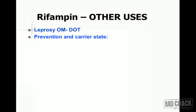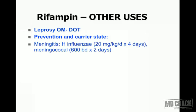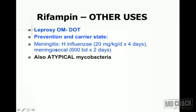Rifampin is also used for prevention and carrier states: for H. influenzae meningitis at 20 mg/kg/day for four days, and for meningococcal meningitis at 600 mg twice daily for two days. It is also active against atypical mycobacteria.